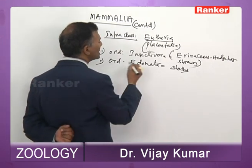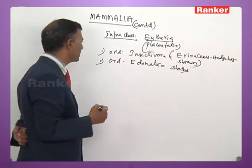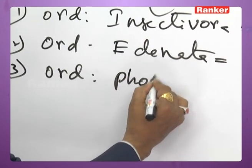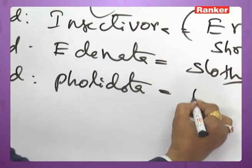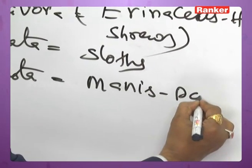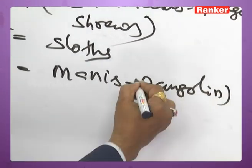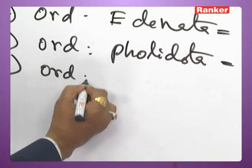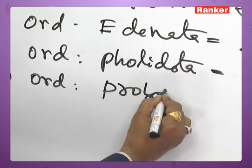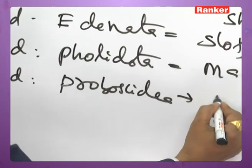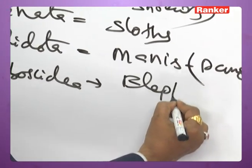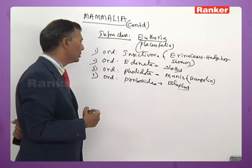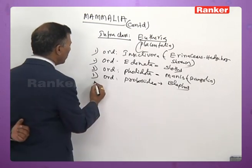Order Pholidota — includes Manis, commonly called pangolin or scaly anteater. Order Proboscidea — includes elephants: Elephas maximus (Indian elephant) and Loxodonta africana (African elephant).